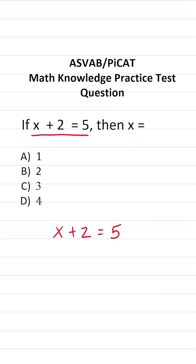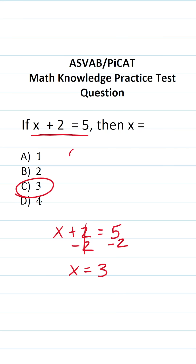This is a one-step equation. The only thing we have to do to solve it is subtract 2 from both sides. This gives us x equals 5 minus 2, which is 3. So the answer to this one is C.